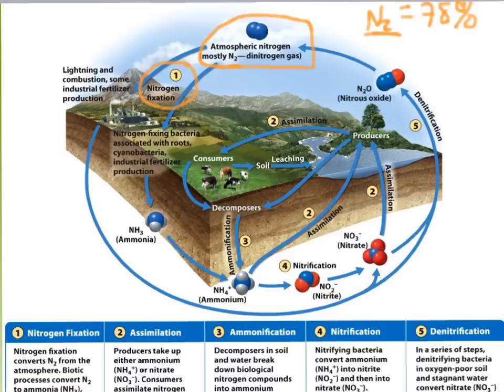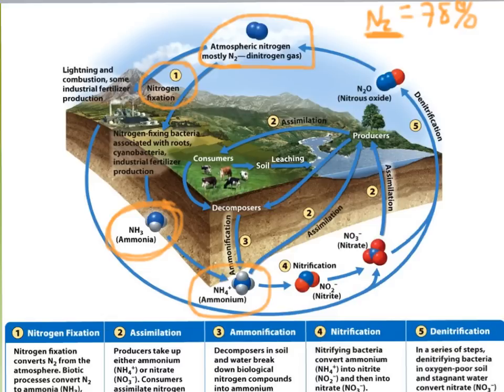These nitrogen-fixing bacteria — and cyanobacteria are also nitrogen-fixing bacteria — are able to use a special enzyme to break down nitrogen into a usable form, that being ammonia. These bacteria use the enzyme, break the bond, get nitrogen into a usable form, and use it for themselves. Any part they don't use, they excrete as waste into the soil. That waste quickly moves to another form, ammonium, which is usable as well. The bacteria near the roots of plants excrete the excess ammonia, the plants assimilate this into their tissues, and in return the plant provides the bacteria nutrients and sugars to survive.